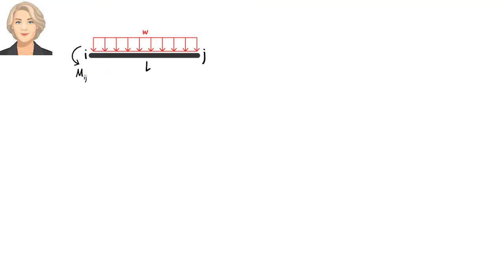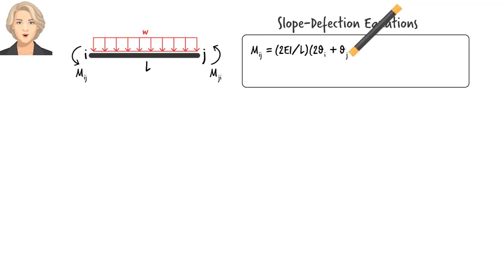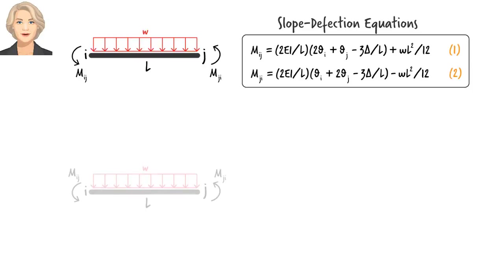Consider a typical beam segment subjected to a uniformly distributed load. Here are its slope-deflection equations. They give us member-end moments in terms of member-end rotations, theta, and the relative end displacement, delta. Let's number the equations 1 and 2. We also want to represent the member-end shear forces in terms of theta and delta.